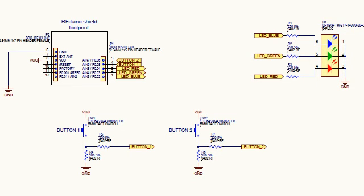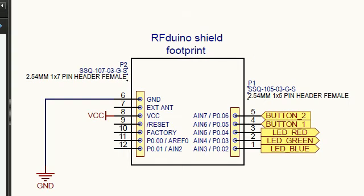Here is the overall schematic of the RGB and button shield. We are going to move into the individual sections now. Here are the pin locations it occupies on the RFduino footprint.